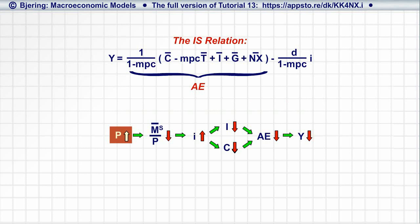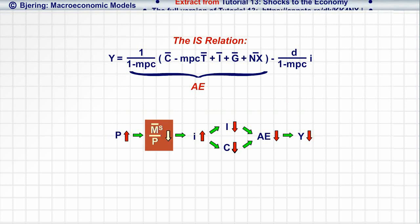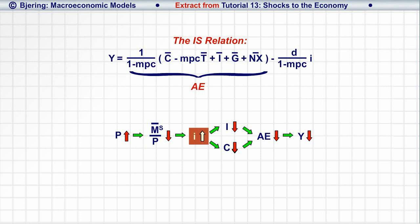...an increase in the price level decreases the supply of real money balances, increases the interest rate, and decreases consumption, investment, aggregate expenditure, and equilibrium output and income.